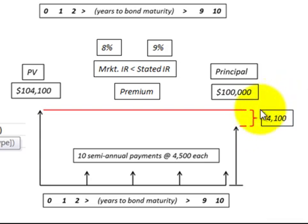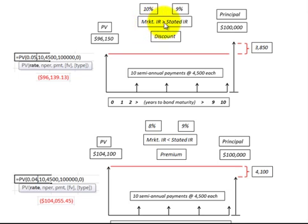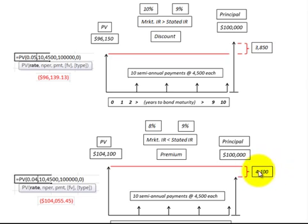That interest has to be amortized over the life of the bond. The market rate of interest is less than the stated rate of interest — here I used 8% on the market rate and 9% on the stated rate. That's the general case: for a discount, the market rate is greater than the stated rate and you're paying less than face value; with a premium, you're paying more than the principal amount. In both cases, that interest component must be allocated over the life of the bond.